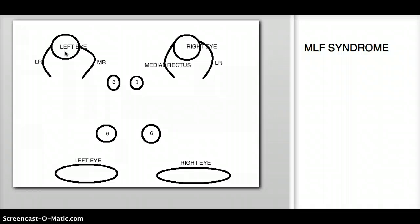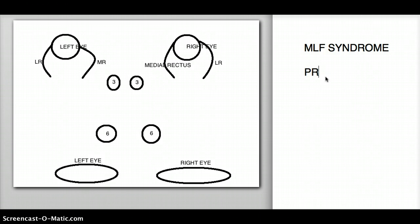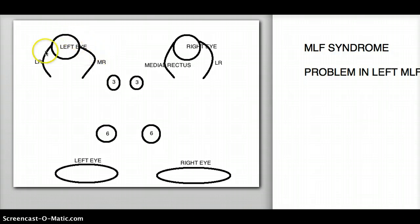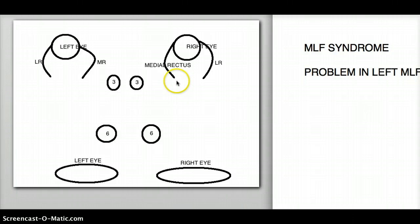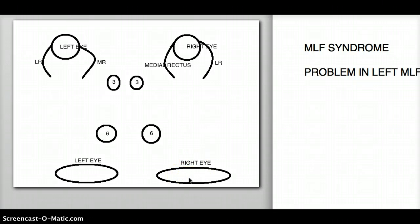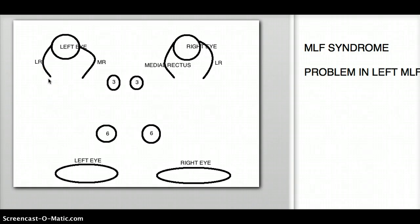In this case, the problem is in the left MLF — we've already decided that in the beginning. So let's orient ourselves: this is the left eye, this is the left cranial nerve 3, this is the right cranial nerve 3, the right eye, the medial rectus of the left eye, the medial rectus of the right eye, lateral rectus of the left eye, lateral rectus of the right eye, cranial nerve nucleus 6 of the left and right eyes. Before we talk about the pathology, let's look at what happens in a normal eye.